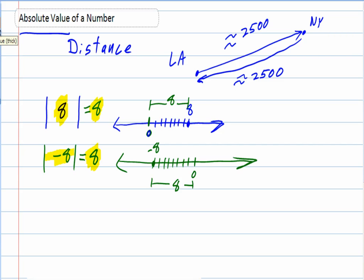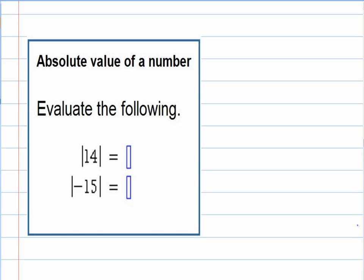So let's take a look at our example question here. Absolute value of a number, evaluate the following. So we have two things here to evaluate. The absolute value of 14, remember, absolute values always give us positive numbers. So the absolute value of 14 would be 14. We can just remove those absolute value symbols. And the absolute value of negative 15, the absolute value becoming positive, makes it a positive 15. Because the distance from negative 15 to 0 is still a positive 15.